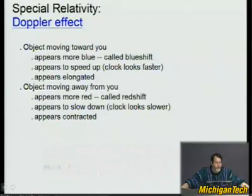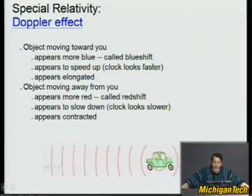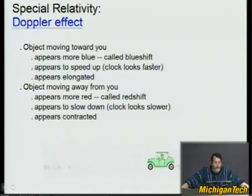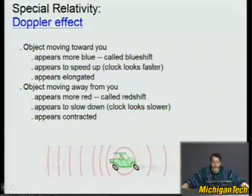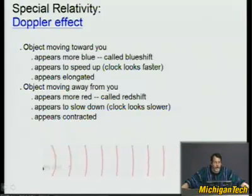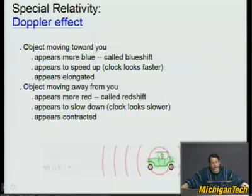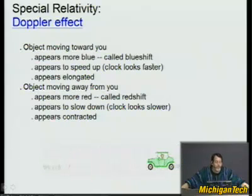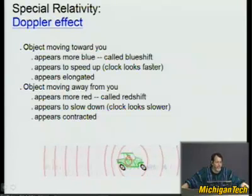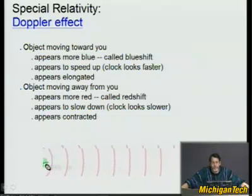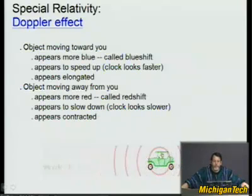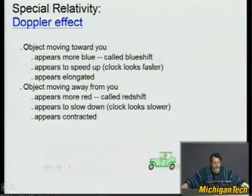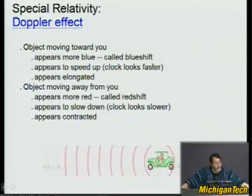The same thing is true with light. If someone is standing holding a green flashlight pointing it toward you, you look and say, oh, that's a nice green flashlight. But then they suddenly start running toward you very quickly, and you notice that the flashlight has turned blue. Then they pass you and point the flashlight back at you — now you look and those photons are not blue, they're not even green, they're red. When it's moving toward you, it's called blueshift; when it's moving away from you, it's called redshift.